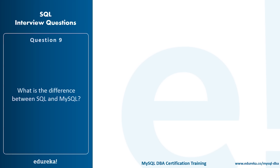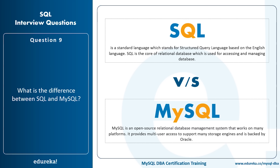What is the difference between SQL and MySQL? SQL is a standard language — Structured Query Language — based on English, and it is the core of relational databases used for accessing and managing the database. MySQL, on the other hand, is a relational database management system that works on many platforms, provides multi-user access, supports many storage engines, and is backed by Oracle. In short, SQL is the language and MySQL is an open-source relational database management system.